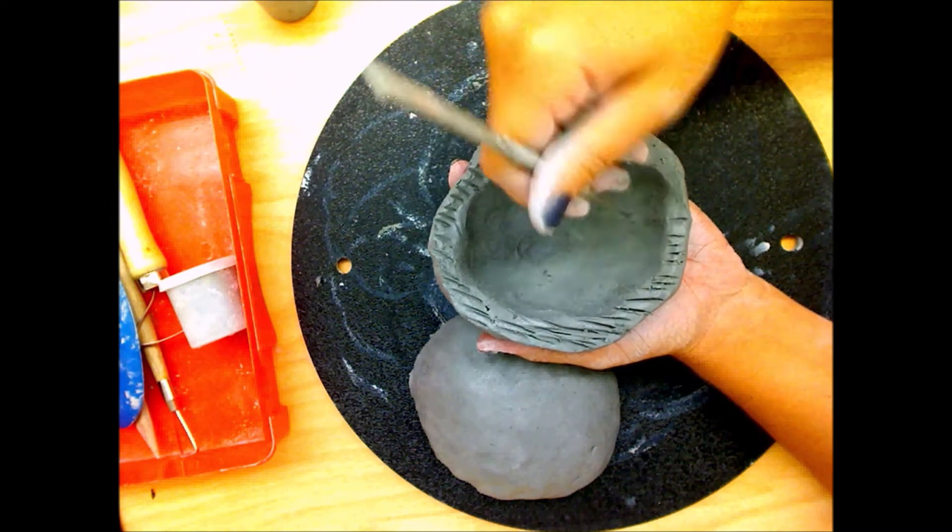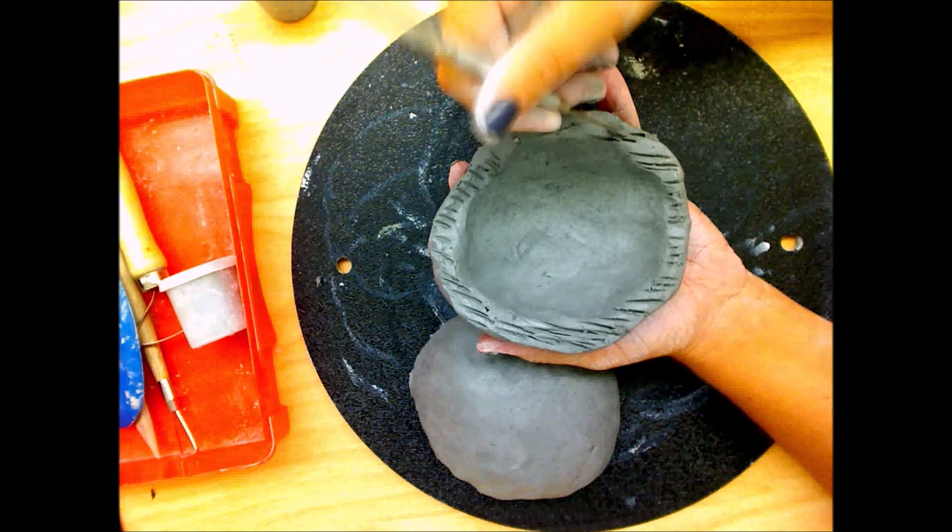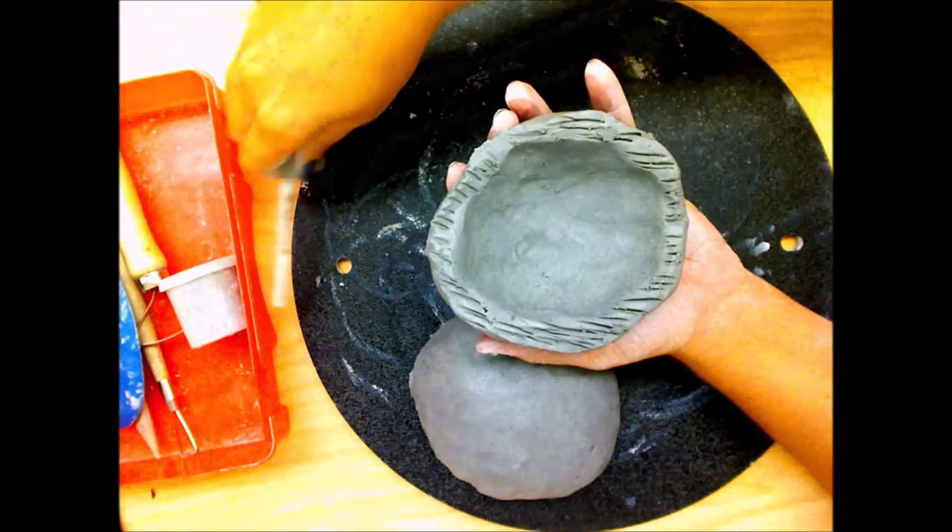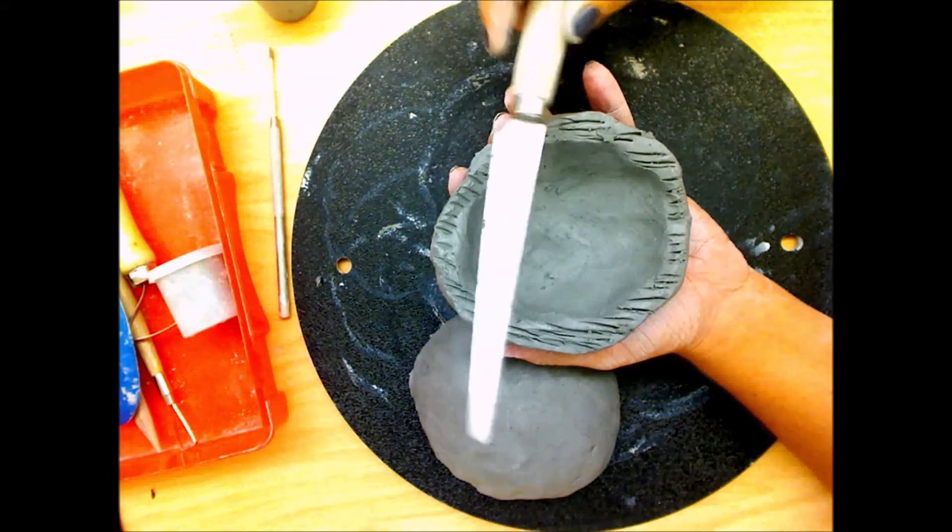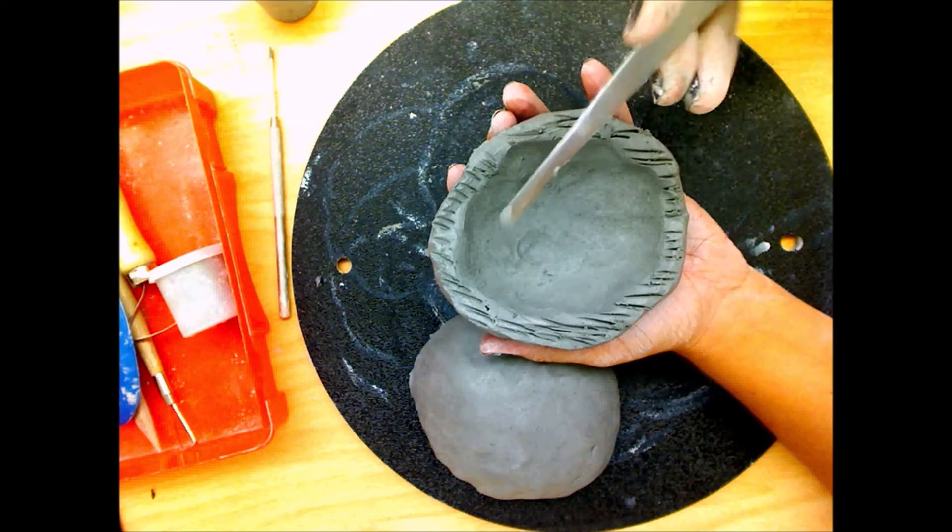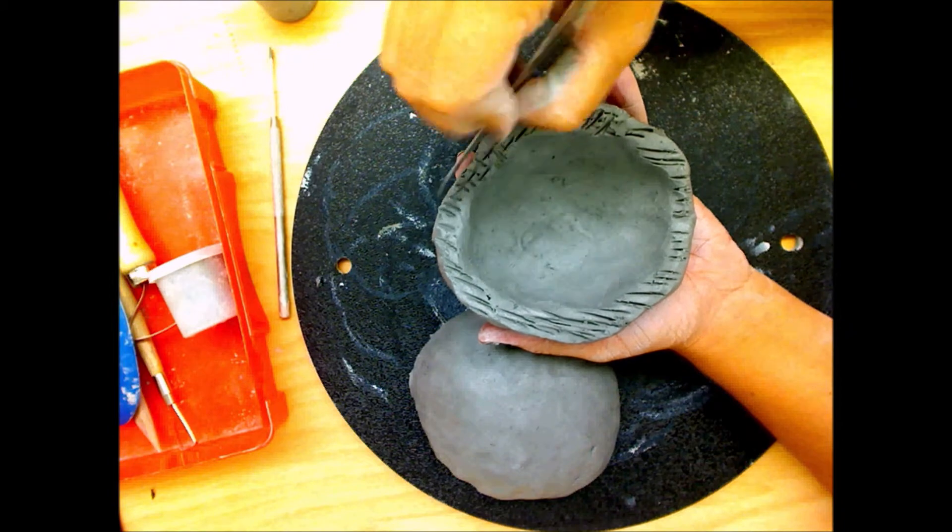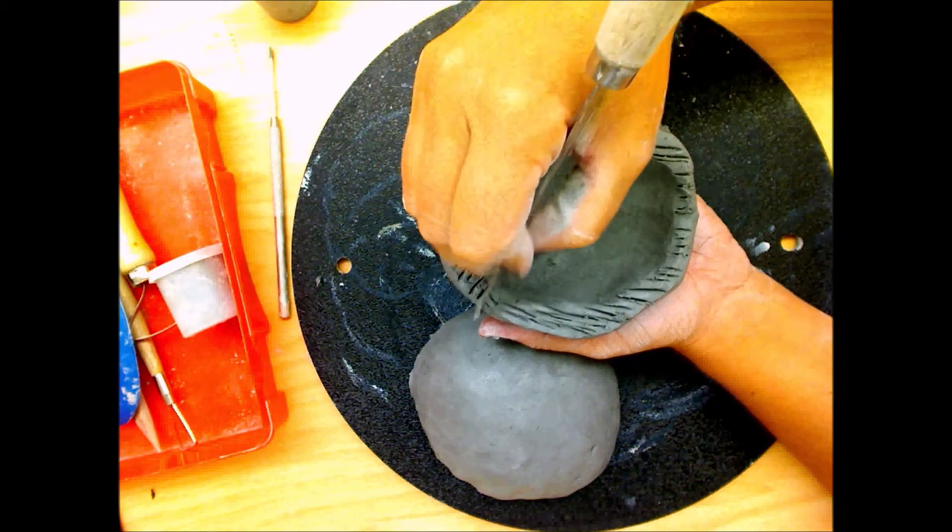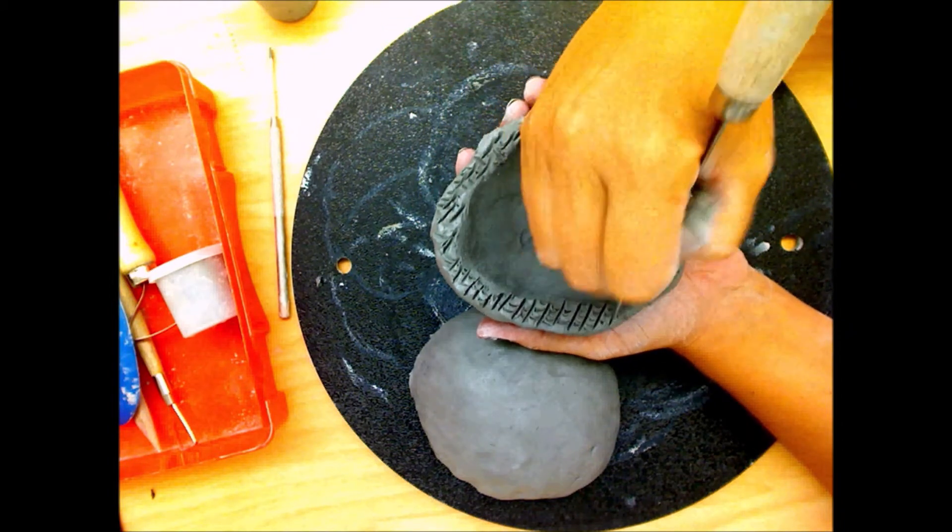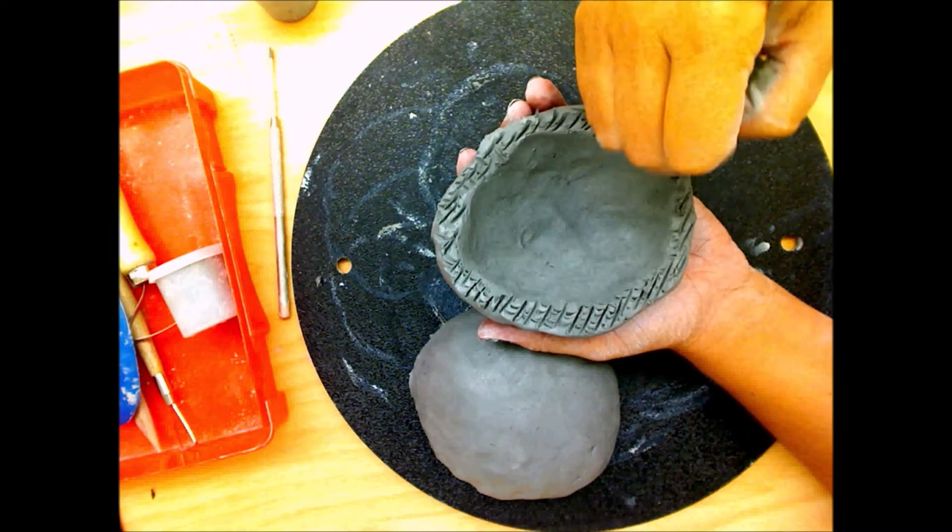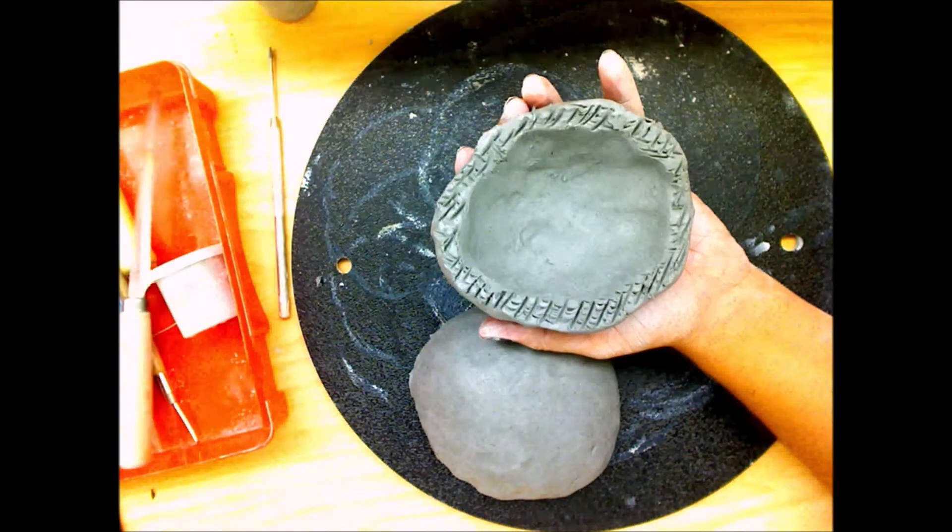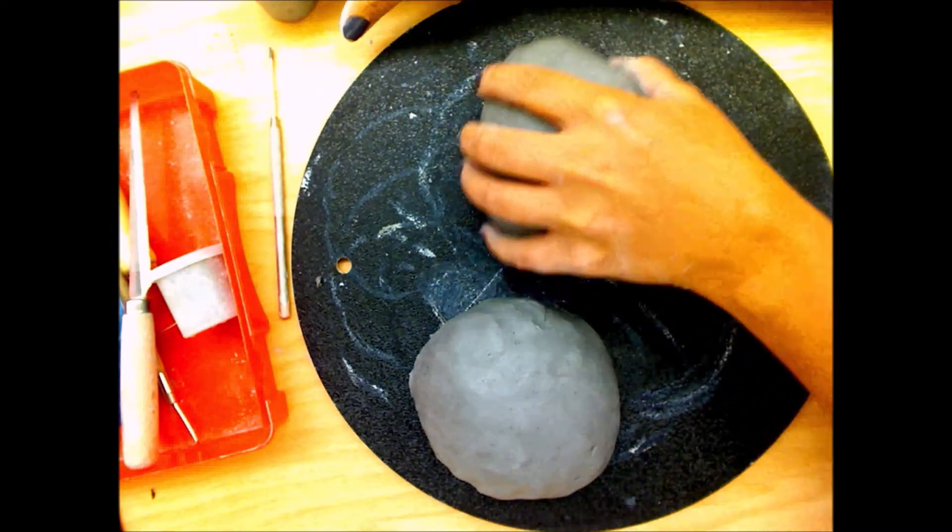Both sides of the attachment need score marks before you attach anything. Anytime you attach clay to clay you score it and then you add slip. You can also use your knife for this. I primarily use my pin tool but the knife will work as well, or a fork or a paperclip, really anything that will create lines and rough up that surface for you is fine.